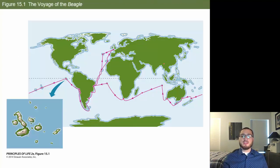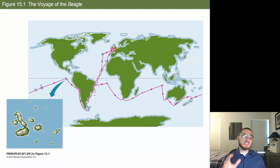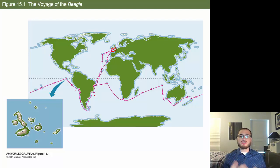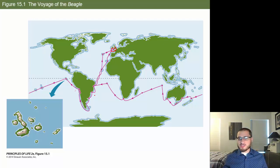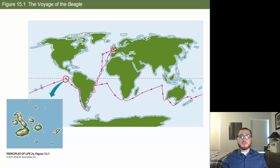As the ship traveled around South America, Darwin spent as much time on land as possible — he hated being on the ship, was seasick, homesick, and bored. Whenever they stopped, he got off, collected specimens, and learned about the land. He was constantly writing in his journal and trying to observe as much as he could.